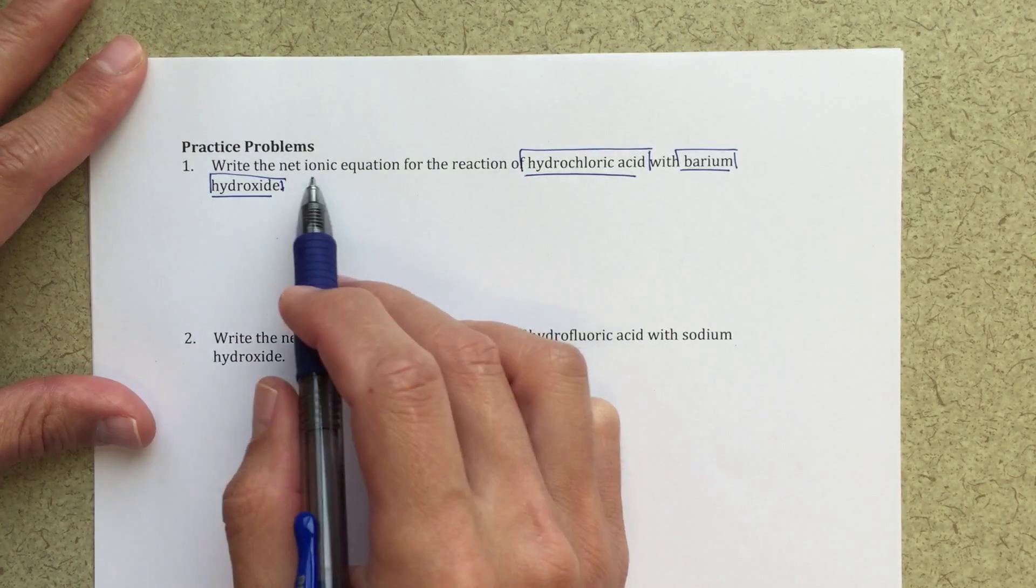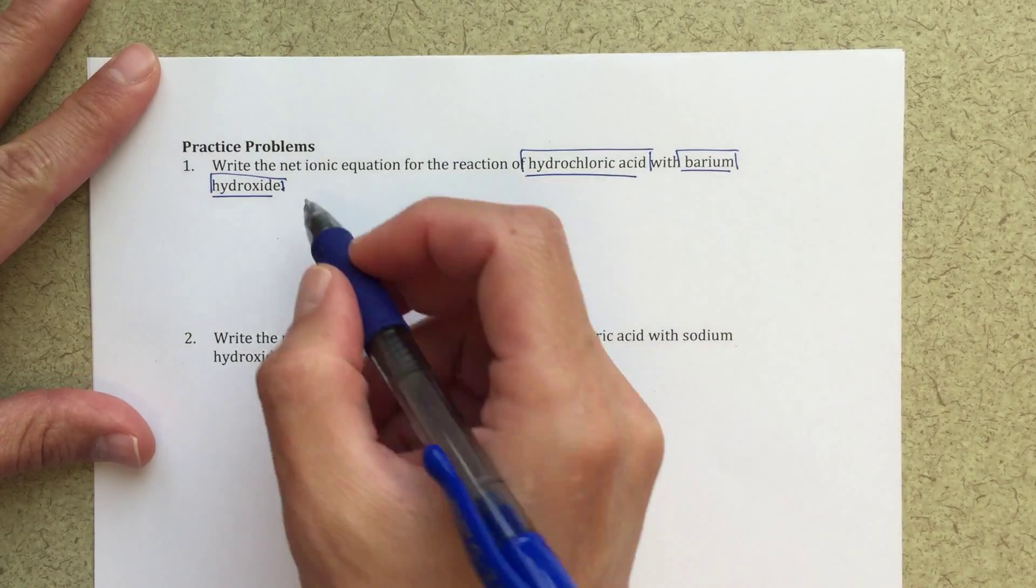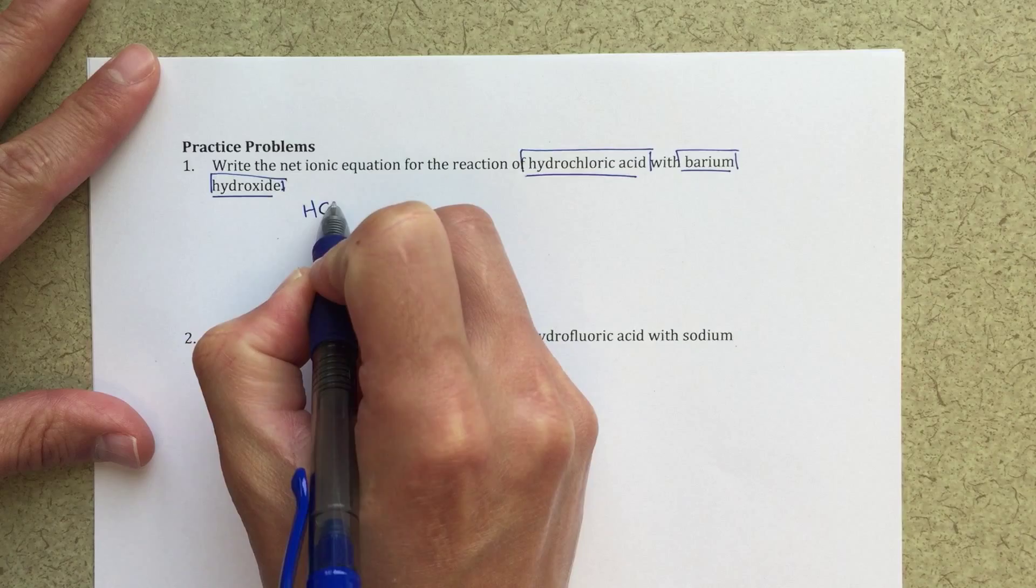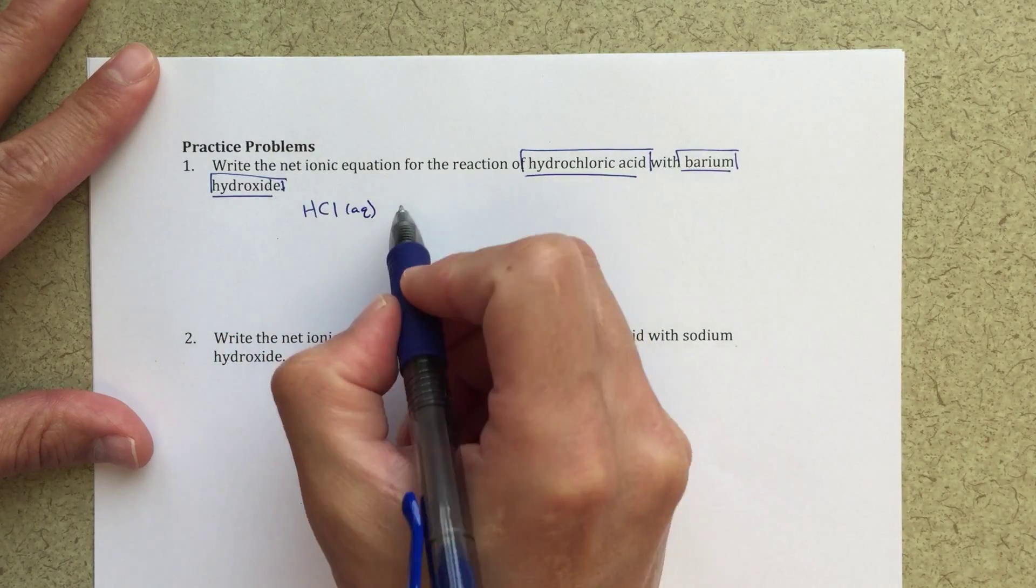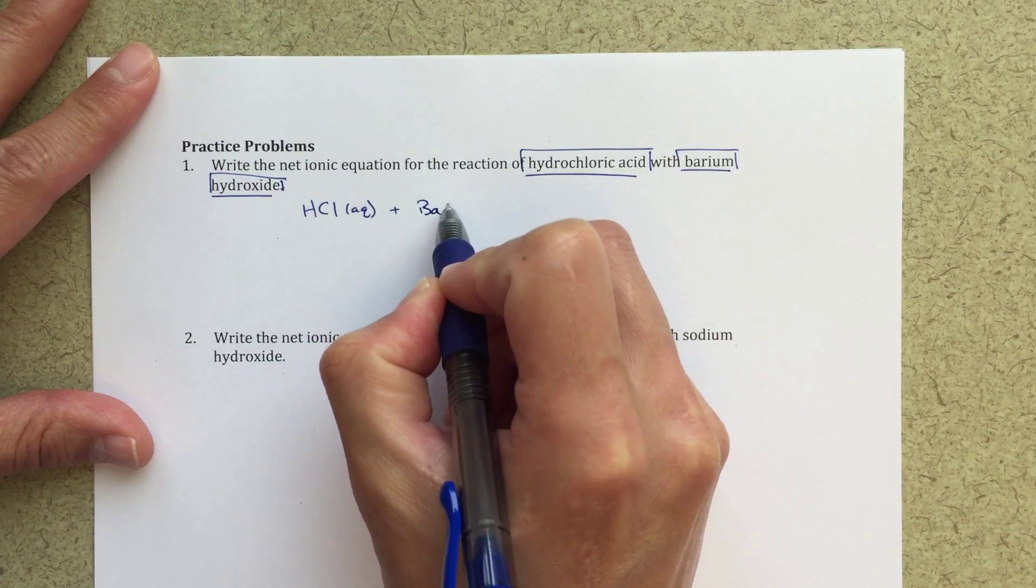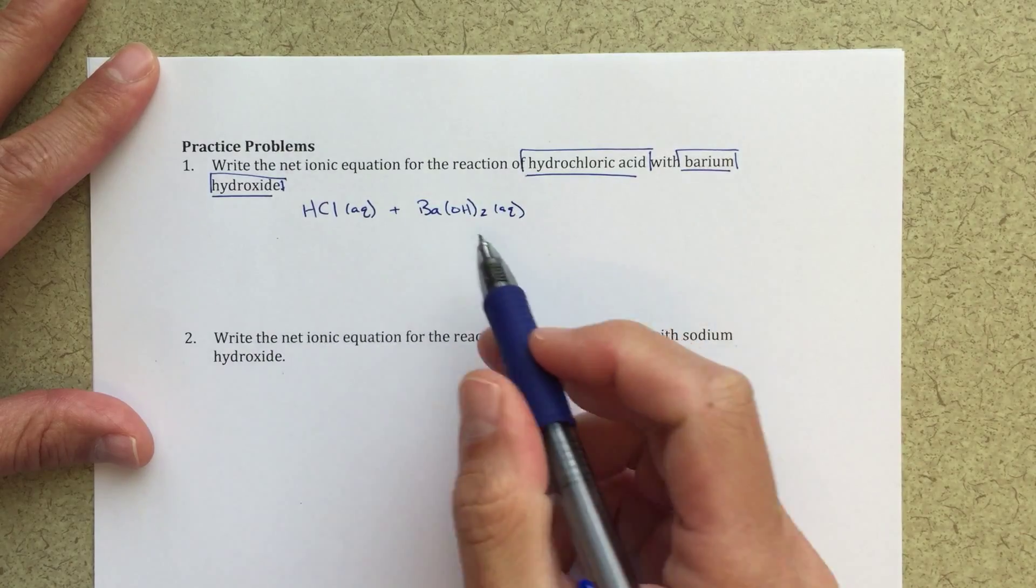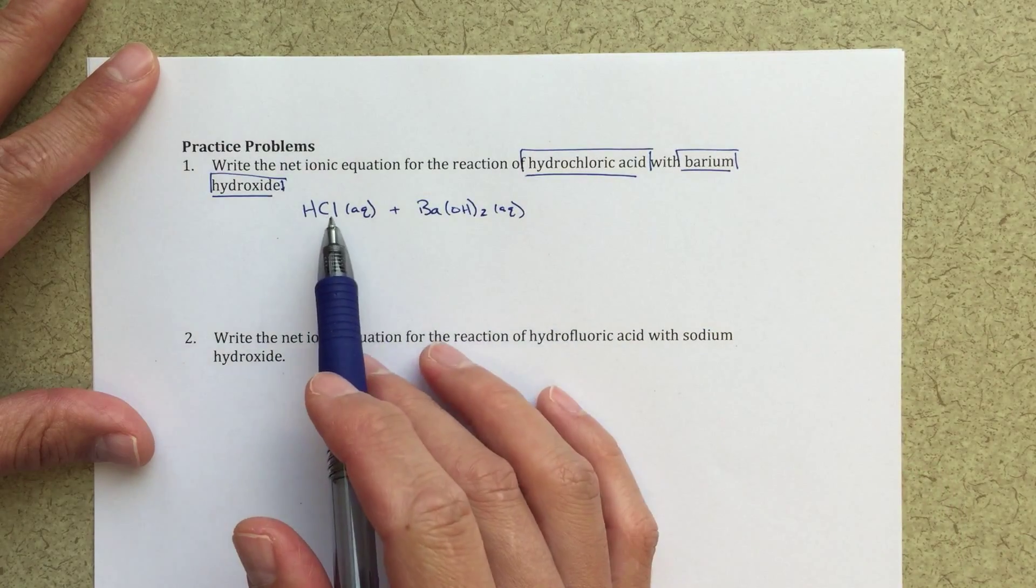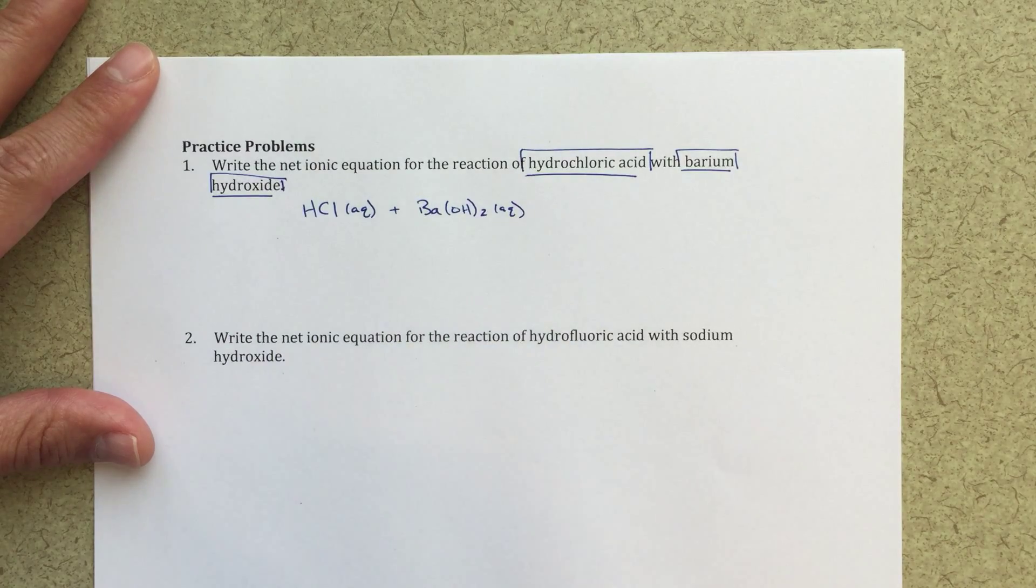If we want to write the net ionic equation, the first thing we're really going to do is write out a balanced molecular equation. So I'm going to start by writing HCl aqueous, representing my hydrochloric acid, plus barium hydroxide aqueous. I know both of those are aqueous simply because strong acid, strong base, and my solubility rules tell me that barium hydroxide is going to dissolve completely.